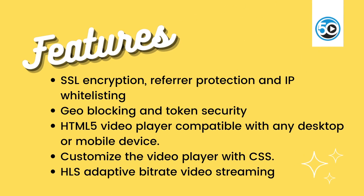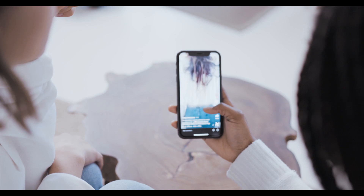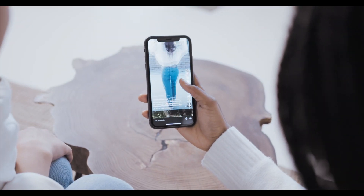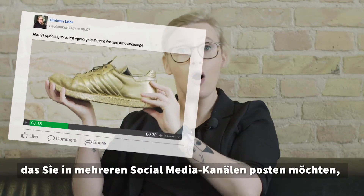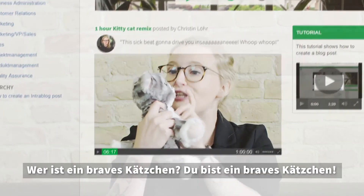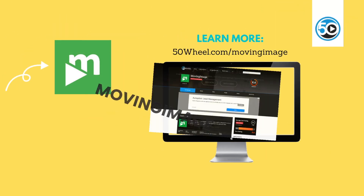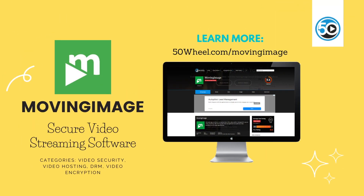Highlighted features include SSL encryption, referrer protection, and IP whitelisting, geo-blocking, and token security. You can even get HLS adaptive bitrate streaming and much more through a custom HTML5 video player. These are just a few highlighted features. To learn more about Moving Image and see a detailed profile, go to 50wheel.com/MovingImage.